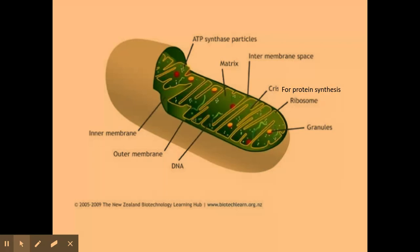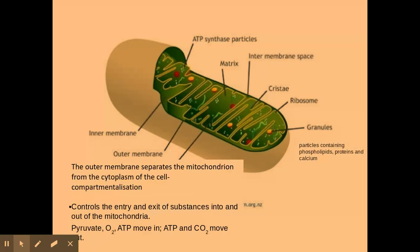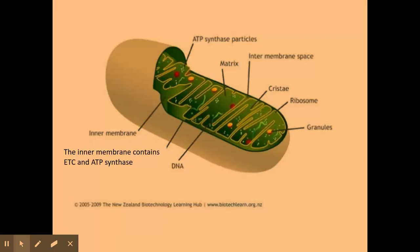We have the outer membrane which is really important for compartmentalization. It separates the components of the mitochondria from the rest of the cytoplasm, but it also involves the control of entry. It controls entry and exit of substances in and out of the mitochondria, such as pyruvate, oxygen, ATP, and carbon dioxide, which you'll learn more about their roles as we go through this topic.